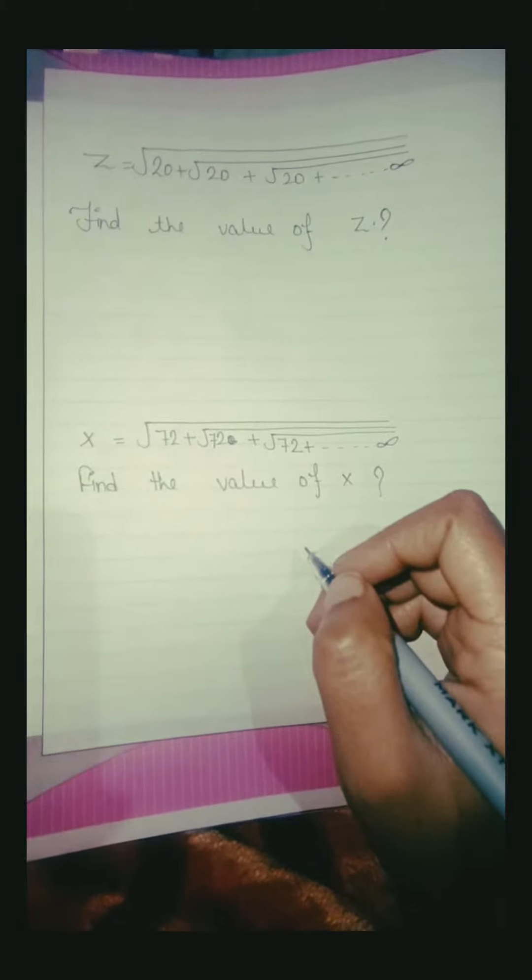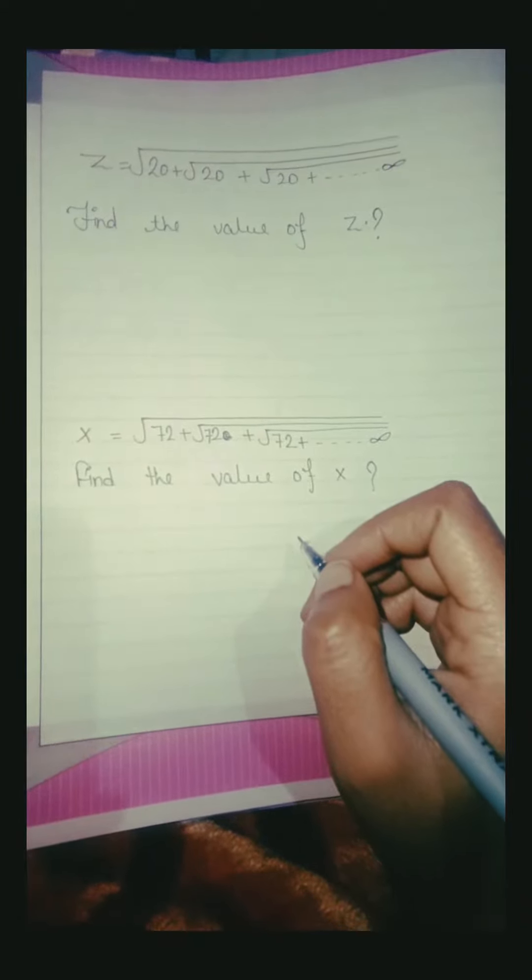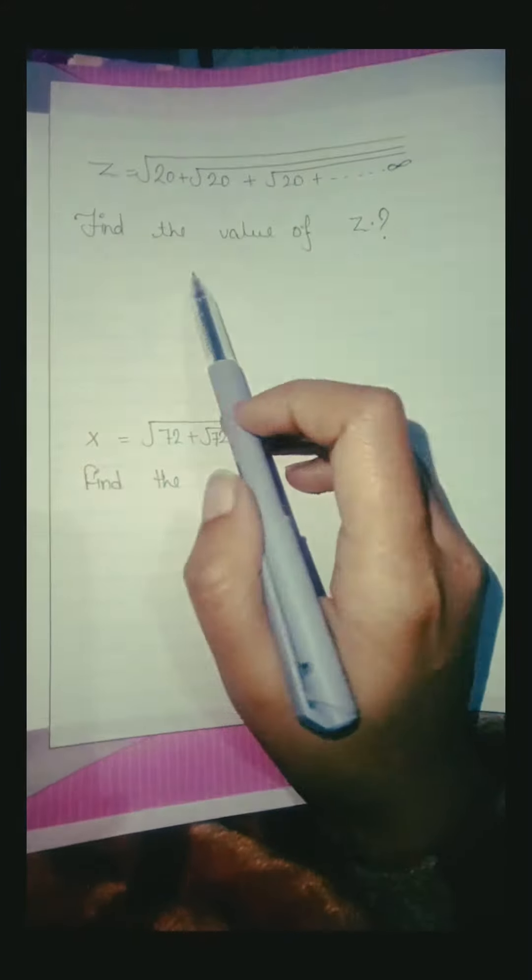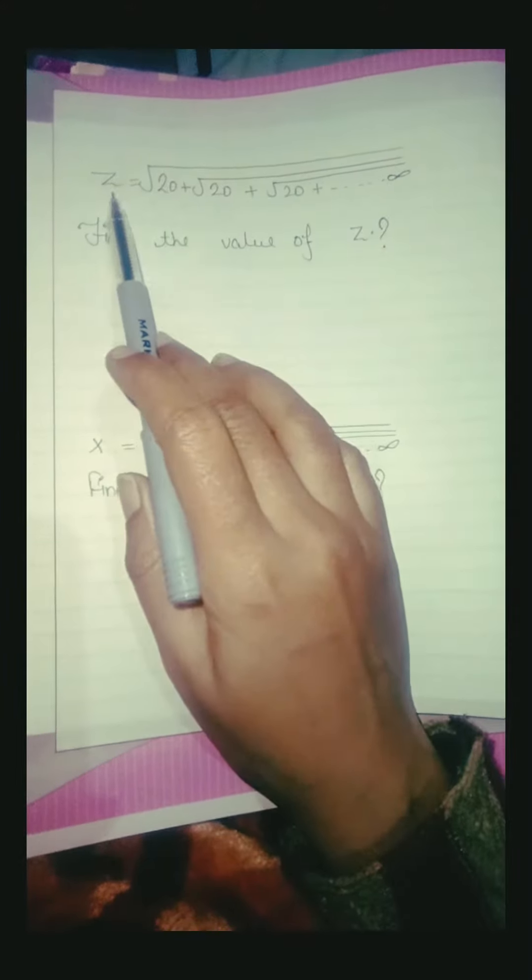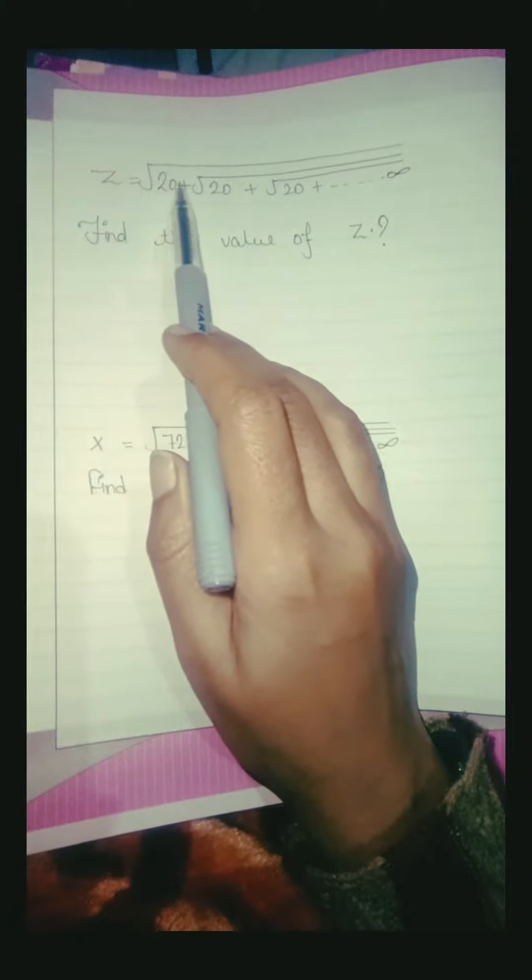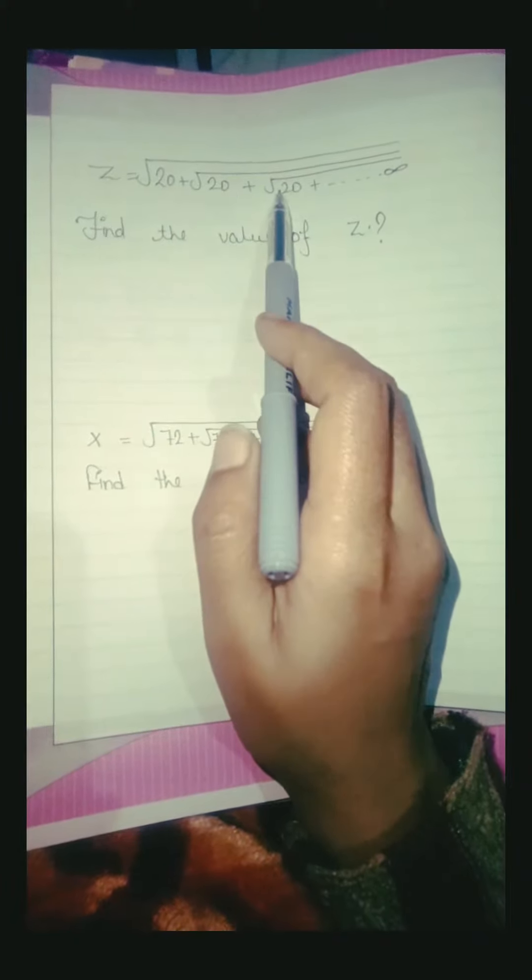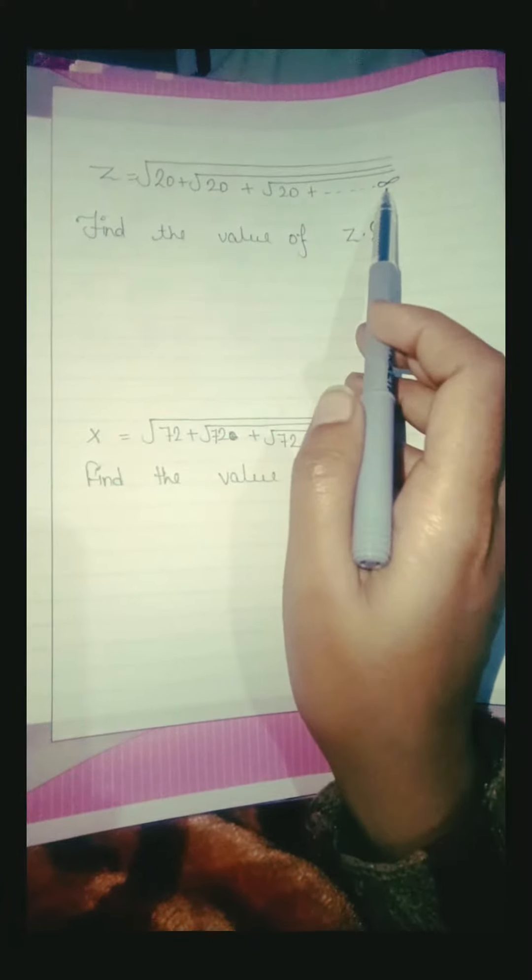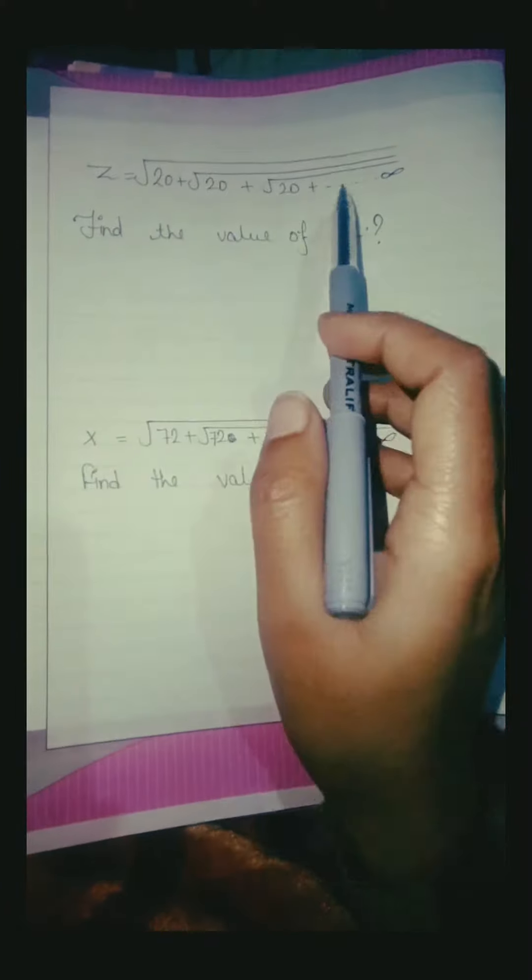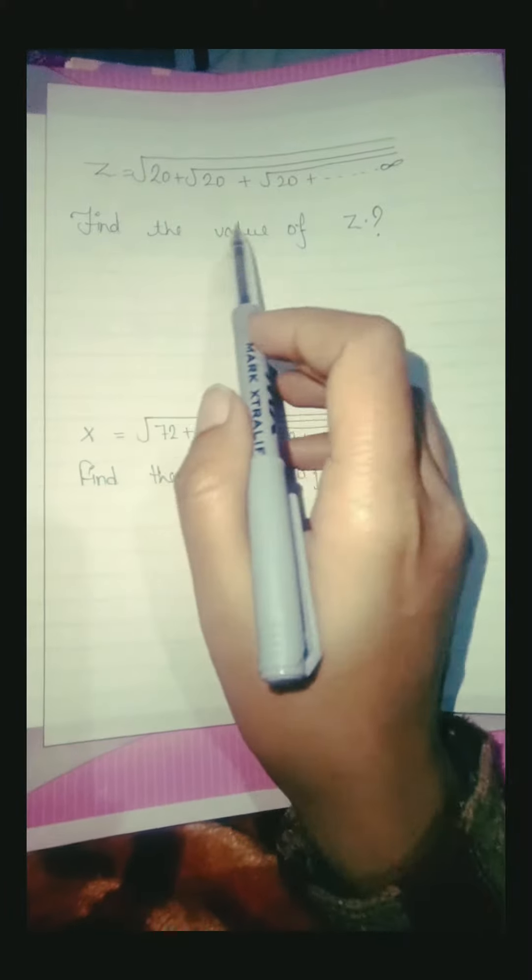Today I will start this question. The equation is z equal to root 20 plus root 20 plus root 20 plus dot dot indefinite. So find the value of z.